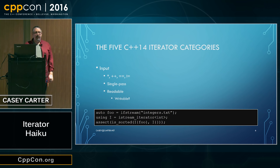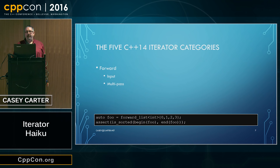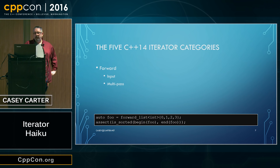Next up, forward iterators. Forward iterators are a refinement of input iterators, which means everything I can do with an input iterator I can do with a forward iterator, but it has an additional characteristic: forward iterators are multi-pass. If I keep an old iterator value around, I can start over from that point again in the sequence. The classic example is iterators over a forward list. They are always readable, sometimes writable, just like input iterators. The key difference is that they're multi-pass.